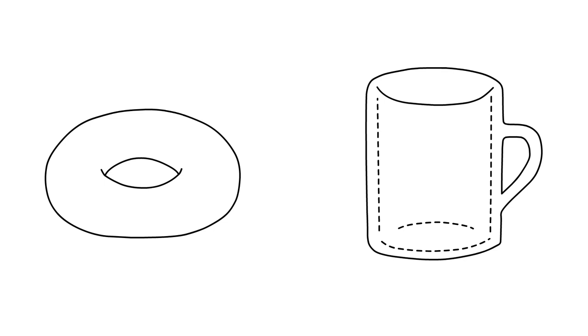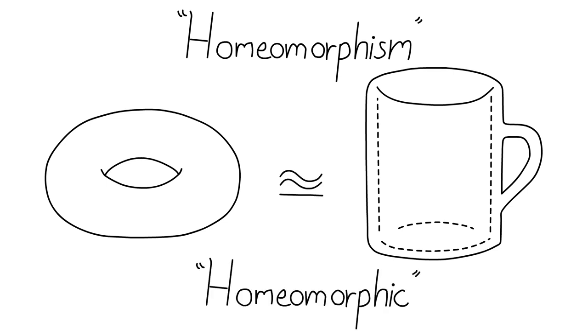This means that the torus and coffee mug have to have essentially the same shape in a very loose sense. After all, you can turn one into the other by a reversible continuous transformation. In topology, we call reversible continuous maps homeomorphisms, and if two spaces have a homeomorphism between them, we say that they're homeomorphic.